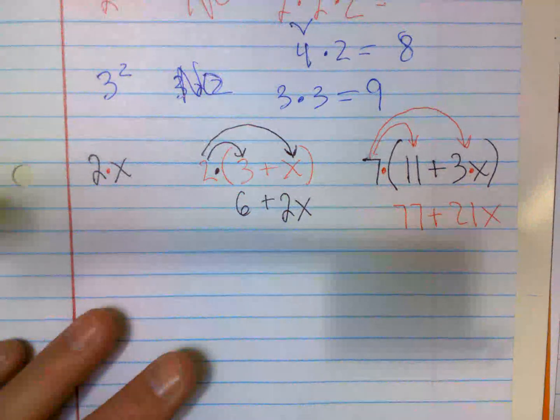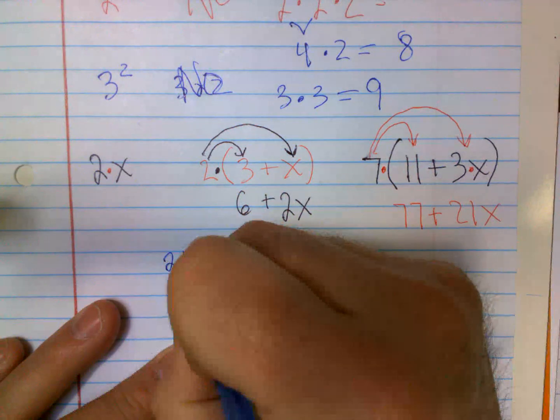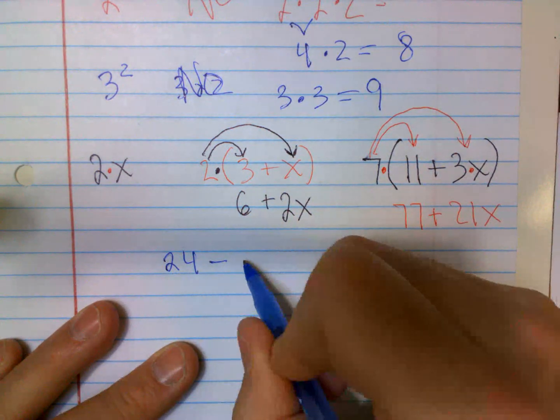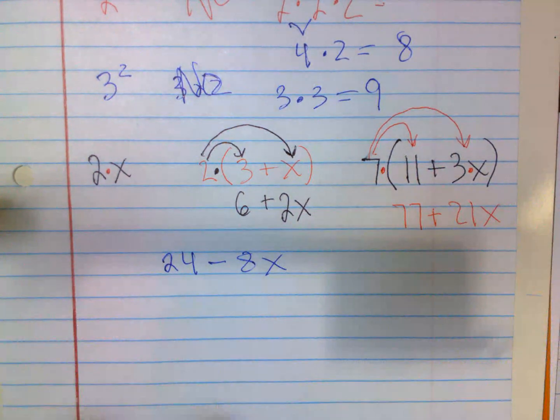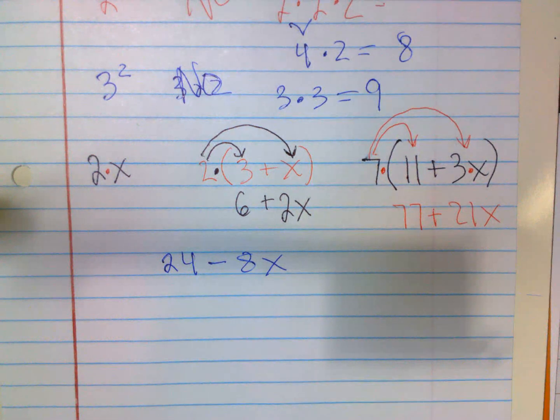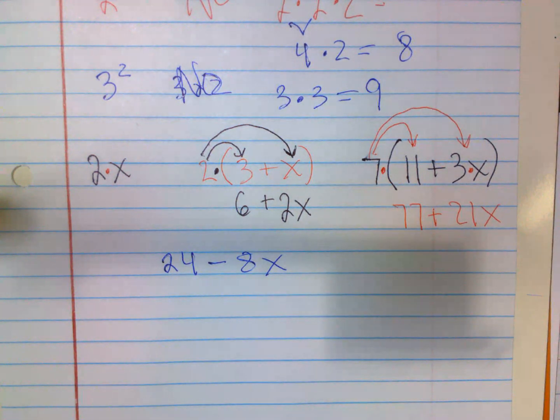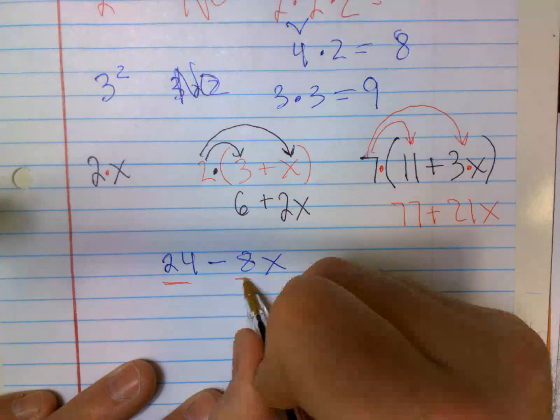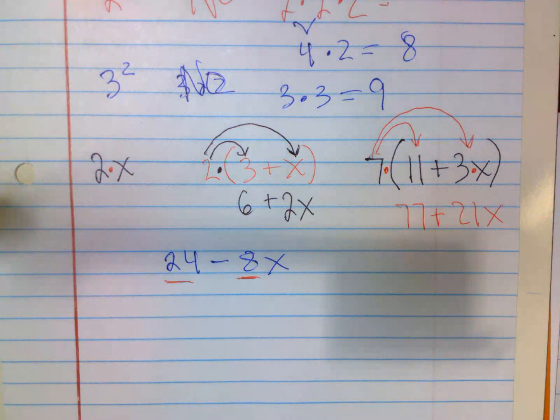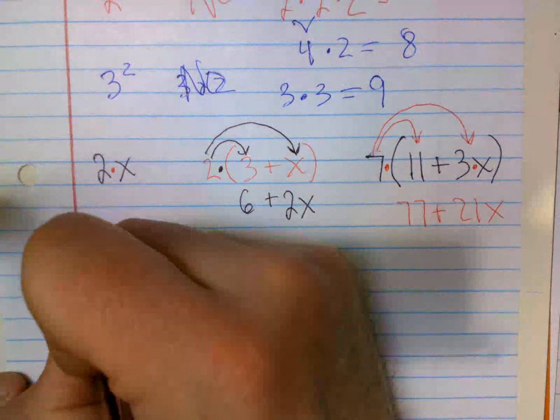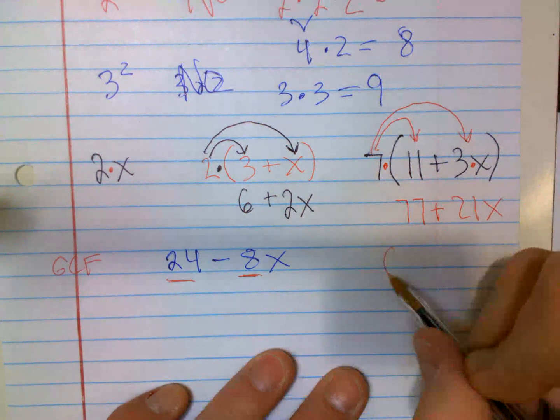Now here's the confusing part with distributive, is where they ask you to do it backwards. You might have 24 minus 8X and they say use the distributive property to find an equivalent value. So what they're asking you, I jokingly call it going fishing. You are fishing for a factor to pull out. What number can you pull out of both of those? What's the greatest common factor, GCF?